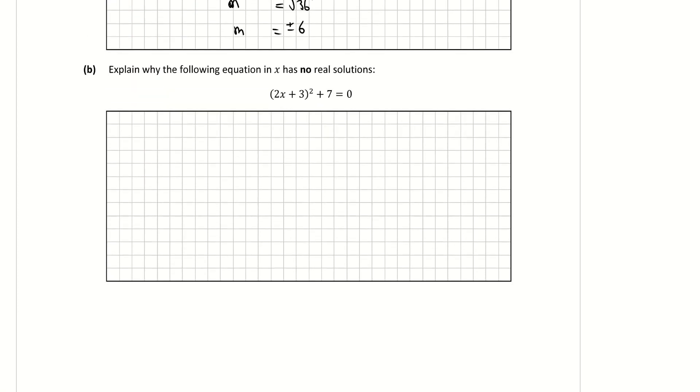Looking at part b to that question 1, explain why the following equation in x has no real solutions. A couple of ways we could do it. Let's look at option 1 first of all, and I'm going to link it here to the discriminant. So I'm going to go about it the same way. The first thing I could do is multiply out this square. So that means I'm multiplying it by itself: 2x + 3 times 2x + 3, and don't forget to add in the 7.